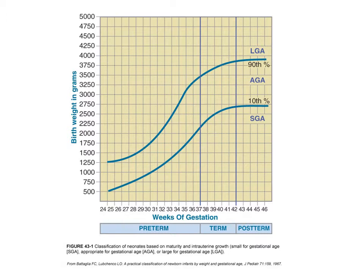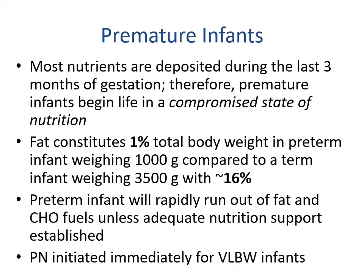On the growth chart, at the extremes we have babies too small and babies too big, and then 80% of babies are in the middle, which is normal.